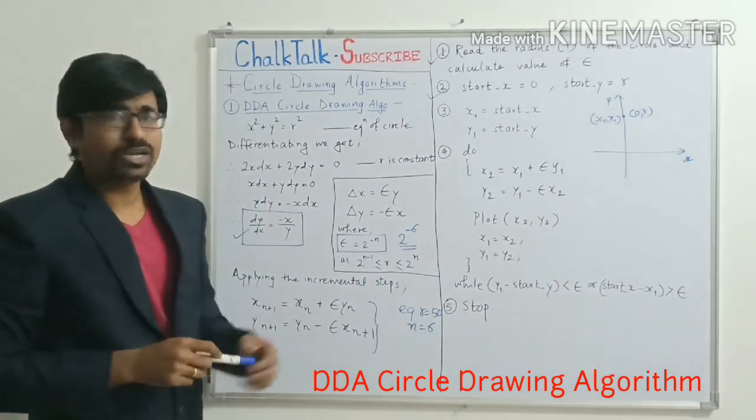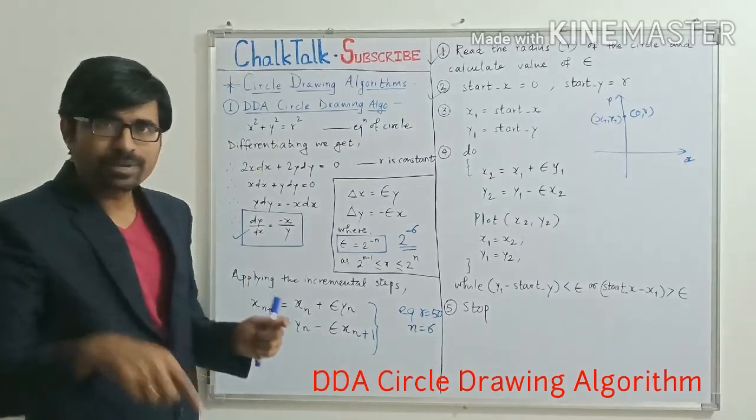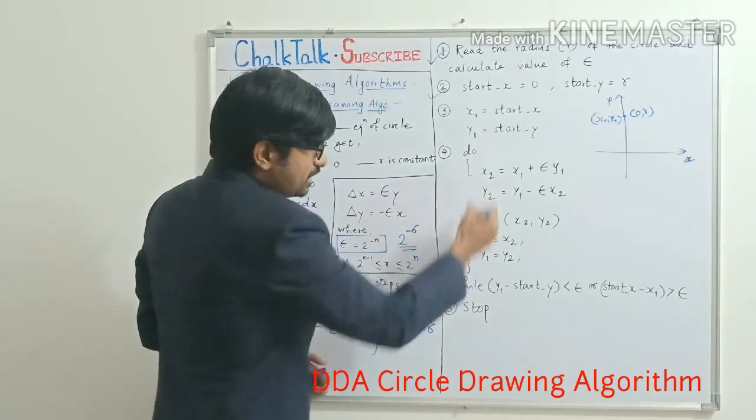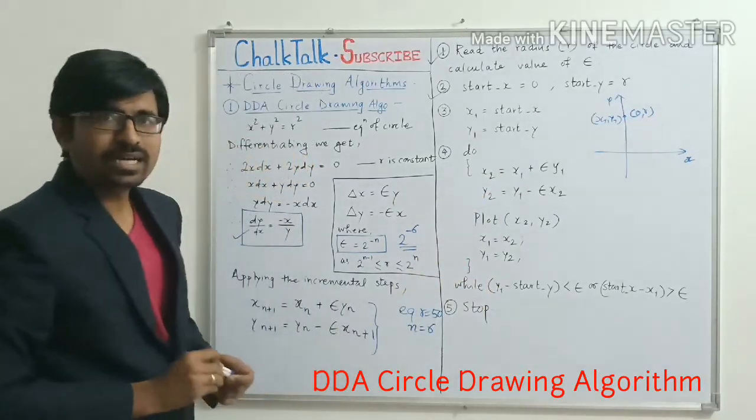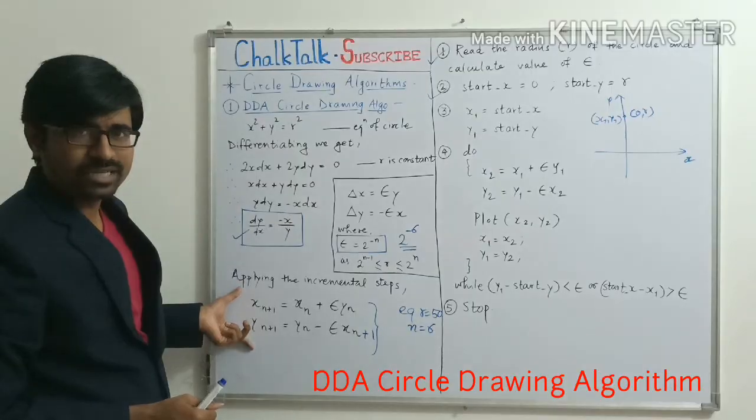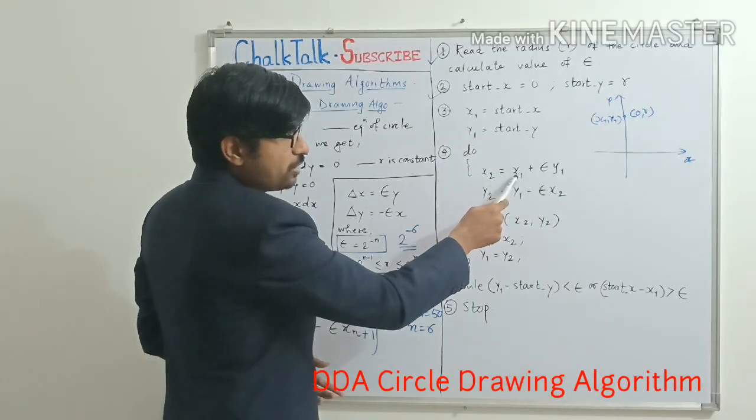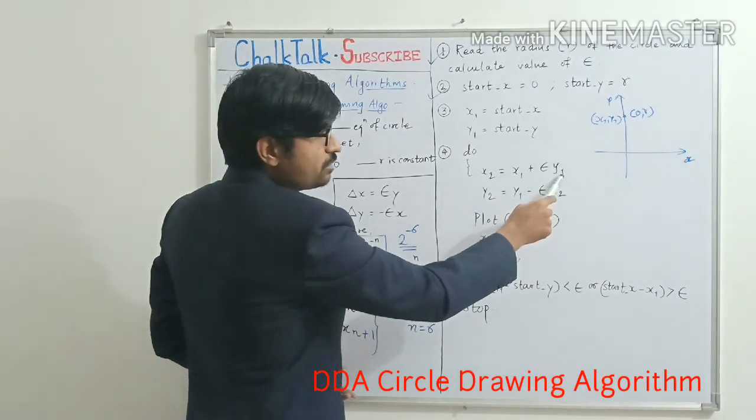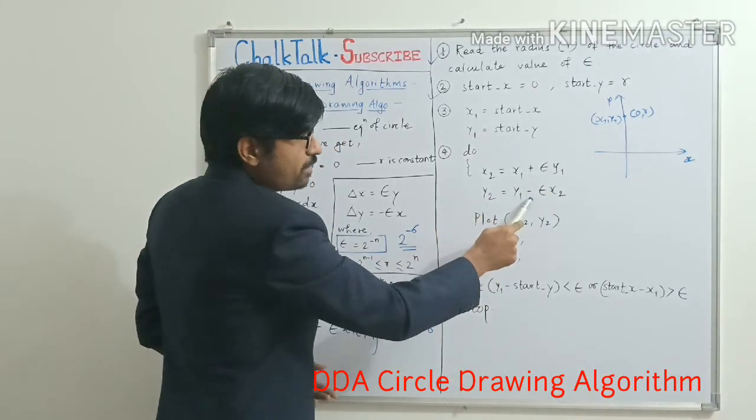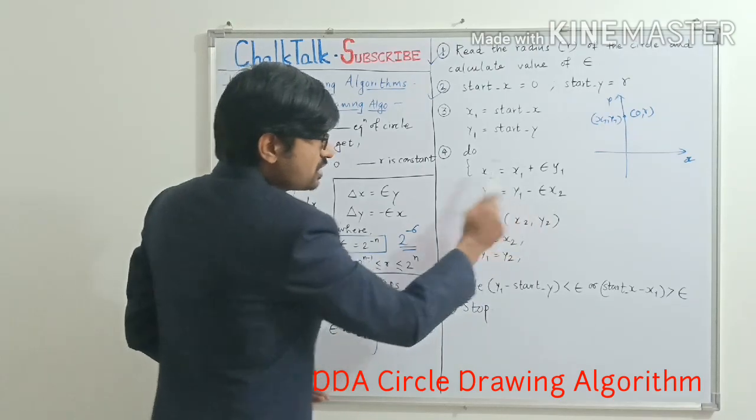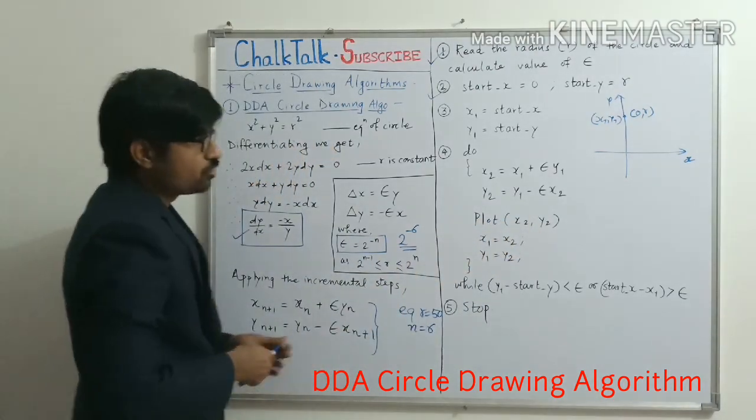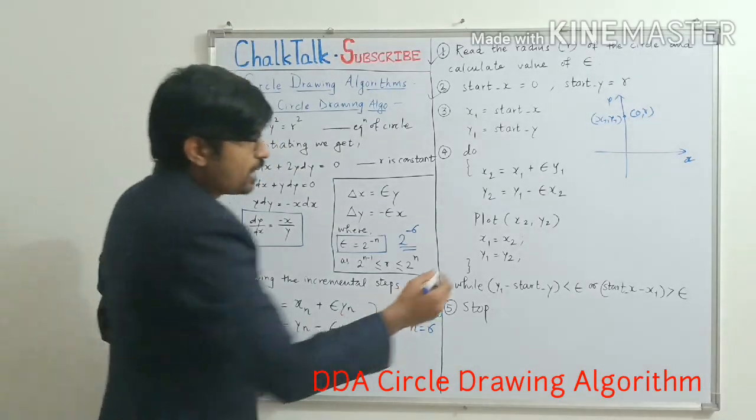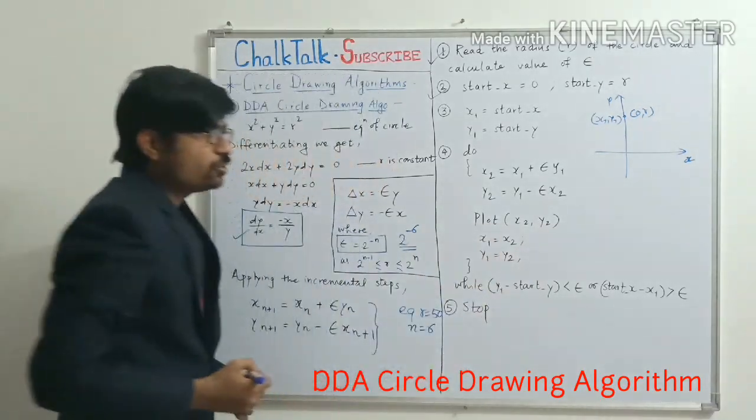Now I have to start the circle drawing from this point and then I have to complete the incremental steps again and again. So again, loop will be coming to the picture. So for this entire loop, I will be utilizing the incremental equations that I have already calculated. So x2 is the new point which is calculated with the help of x1, the original point, plus incremental factor multiplied by y1. And y2 = y1 - incremental factor × x2. This is the updation what we have discussed. So with the help of these two equations, I will be getting new coordinates point x2 and y2 and I am plotting those points.